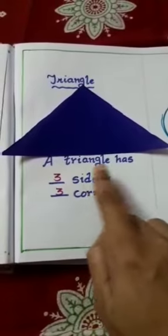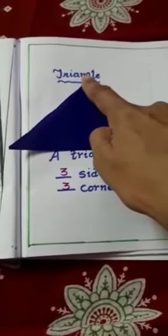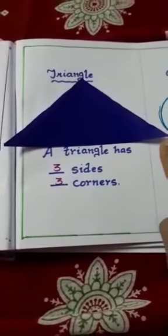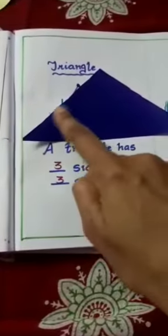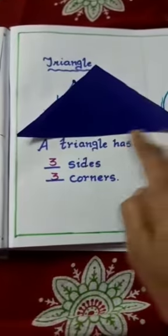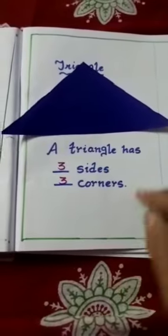A triangle has three sides. And how many corners does it have? Three corners: first corner, second corner, third corner. It has three sides and three corners.